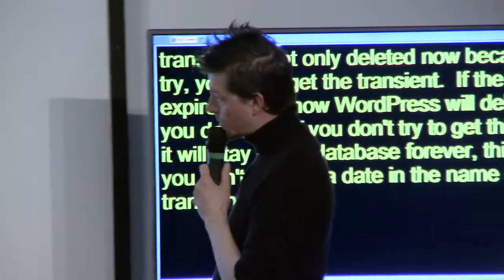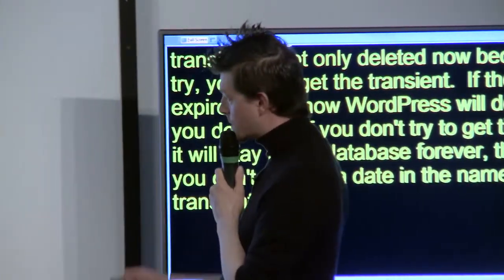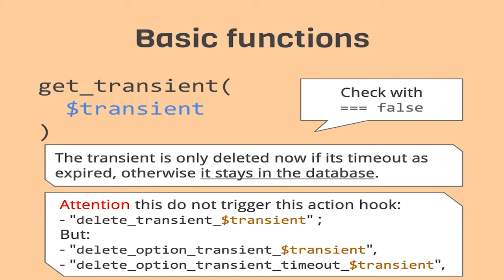Talking about hooks: when you get a transient and it's expired, the 'delete_transient' hook with the name won't be triggered. But a different expiration hook will be. This is not in the codex - only on my slides.